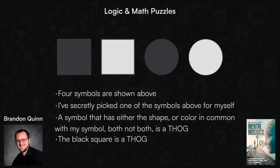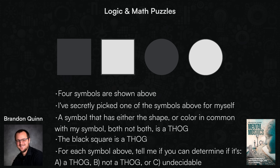The question for you is, for each of the symbols above, can you determine if that symbol is either a Thog, definitely not a Thog, or if it's undecidable, meaning you don't have enough information to determine. You have to do this once for every symbol. In my opinion, this is a fascinating puzzle, difficult as it may be, so I highly encourage you to take as much time as you need to work out the solution. Pause the video now if you want to try to work out the solution for yourself, and when you're ready, come back and we'll review the answer together.